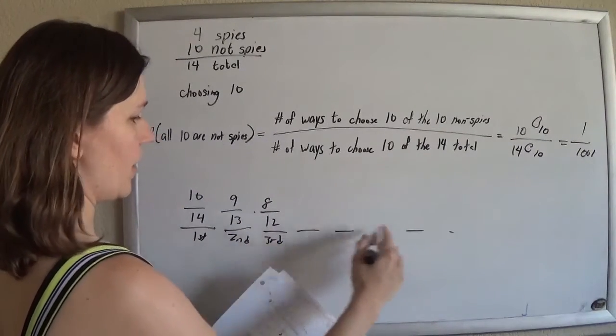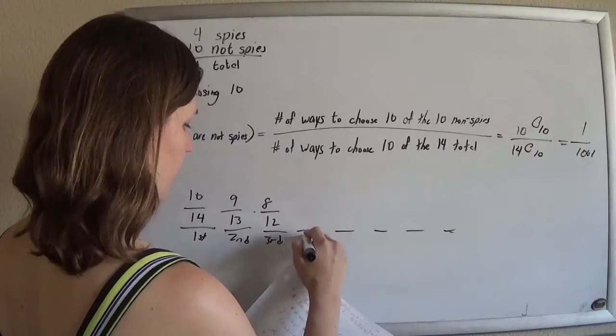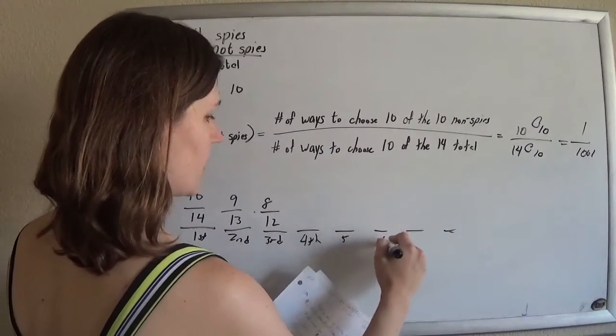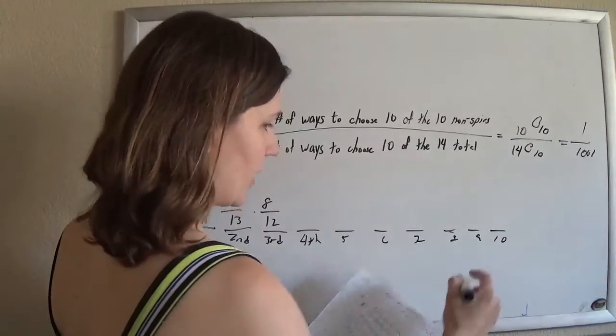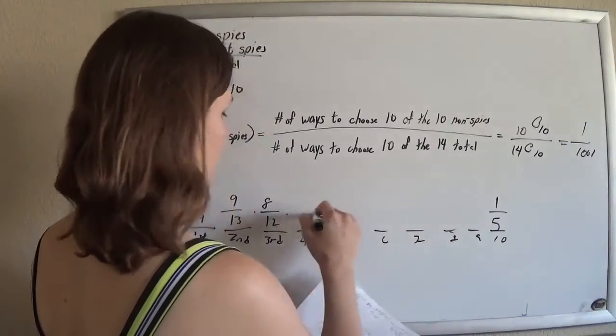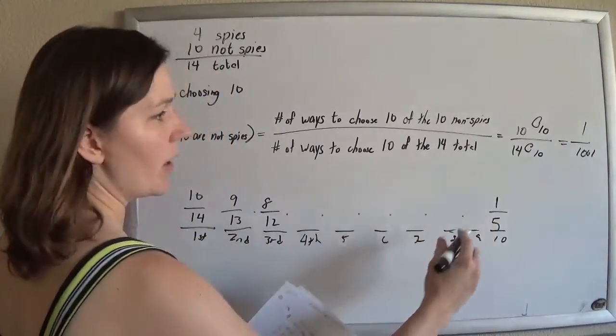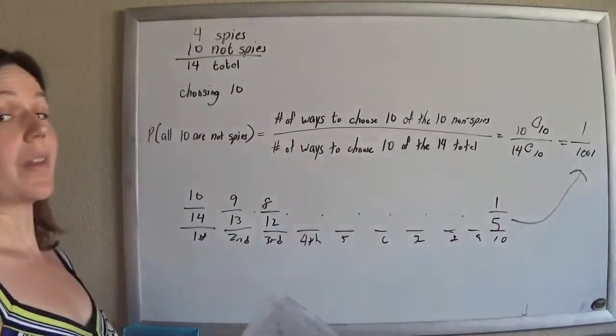And then if you go all the way down to the 4th, 5th, 6th, 7th, 8th, 9th, 10th person, that'll be a 1 out of 5, and you just multiply those all together and it will equal that.